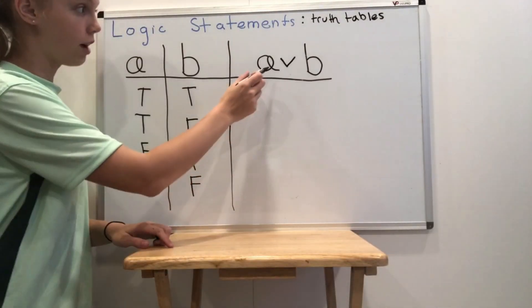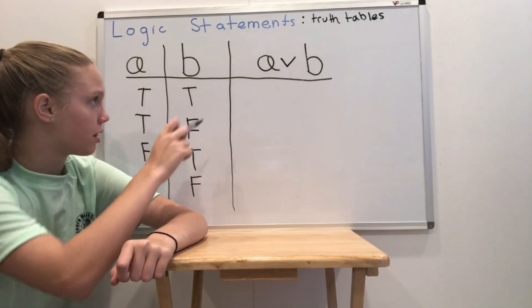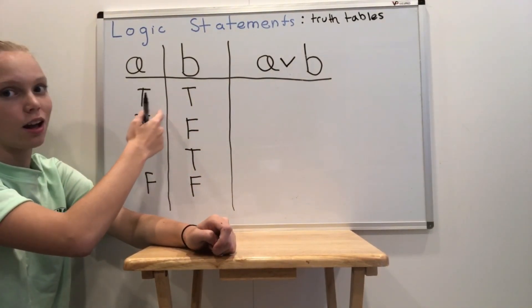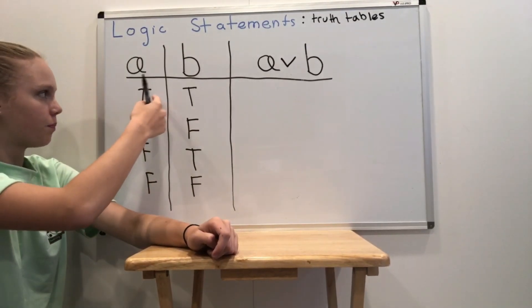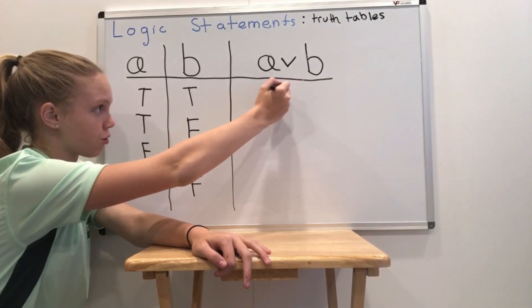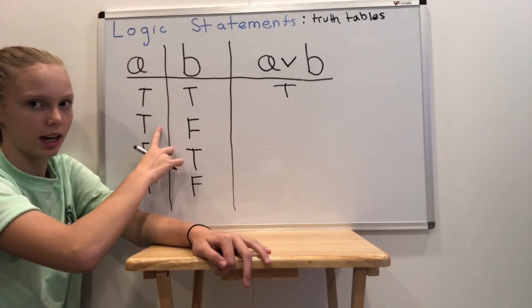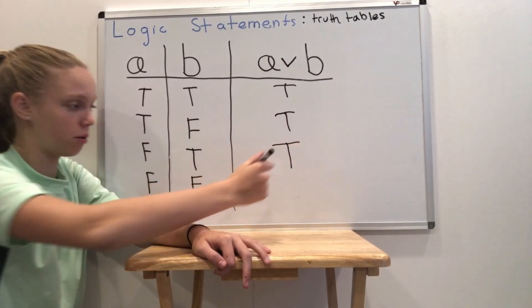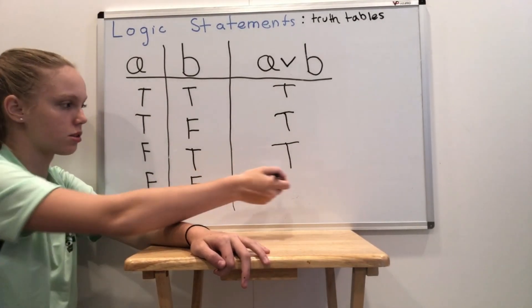Now let's determine the truth value of A or B. The upside-down AND symbol is the OR sign. When we say A or B, we mean that either A or B must be true. T and T — we have at least one true, so A or B is true. T and F — we have at least one T, so it's still true. Same goes for F and T — we have one true, so the whole thing is true. For F and F, there are no true values, and thus A or B is false. So the truth values are T, T, T, F.